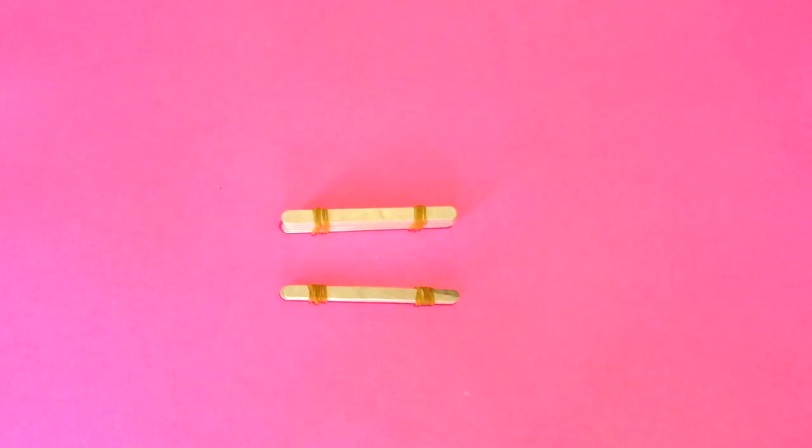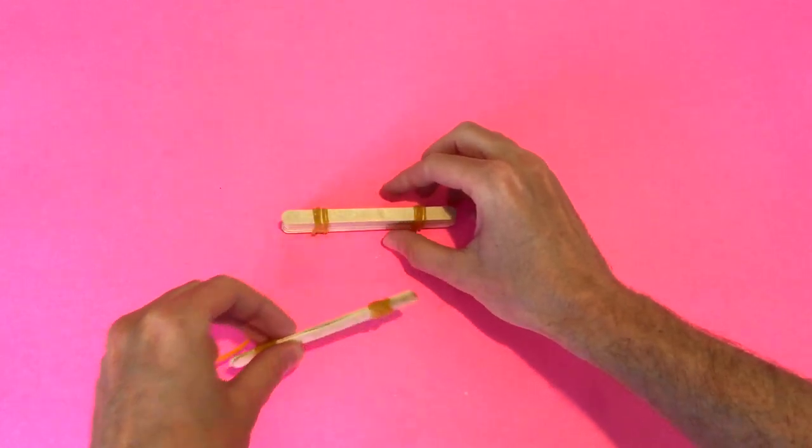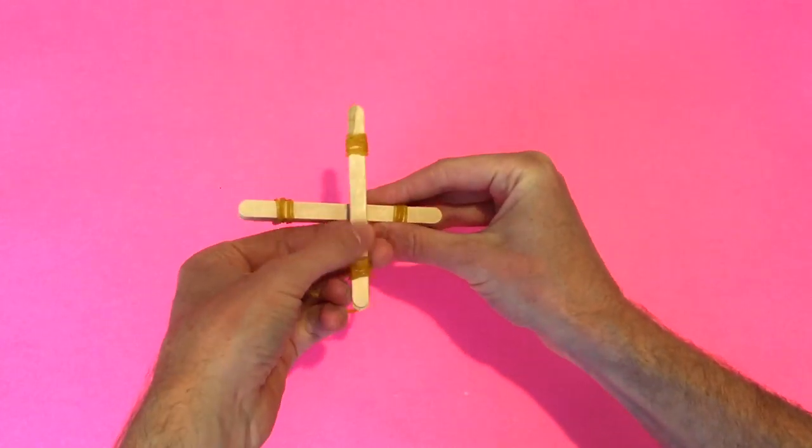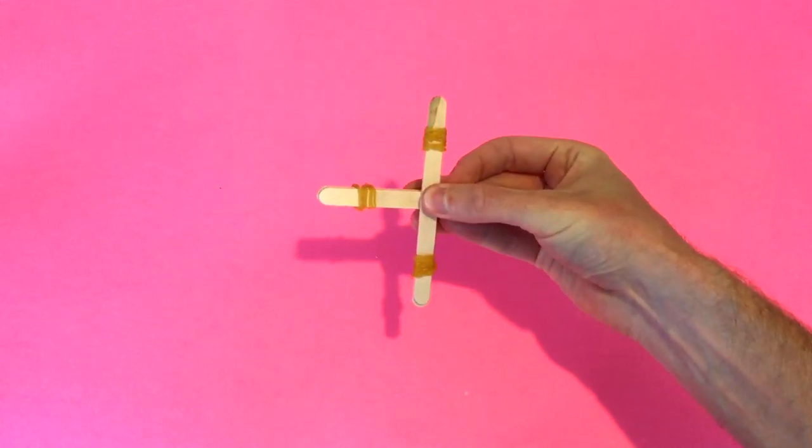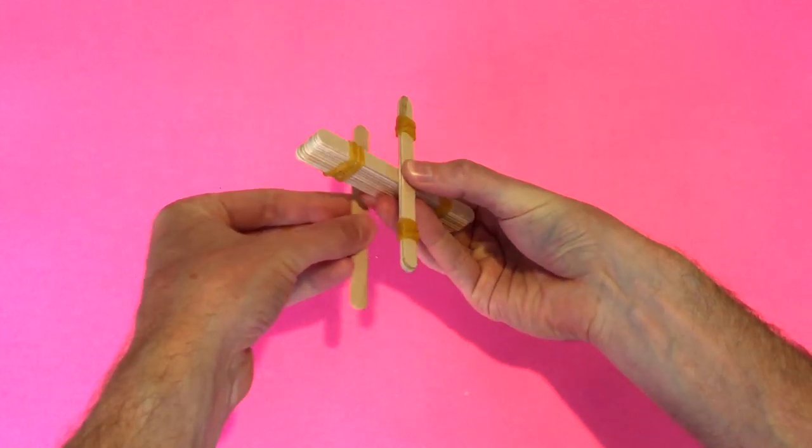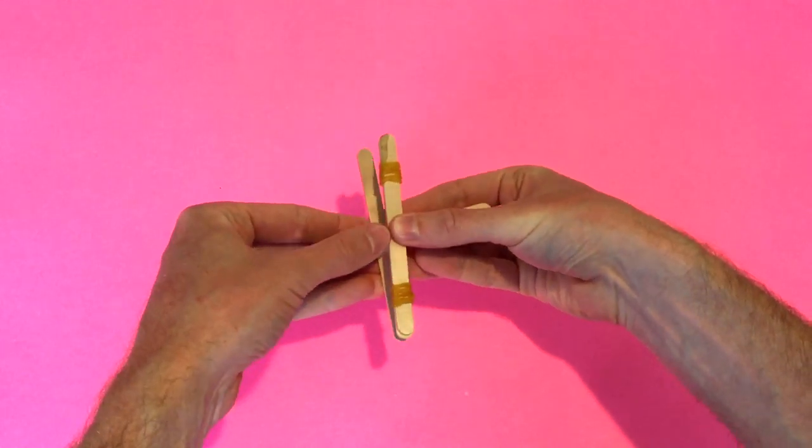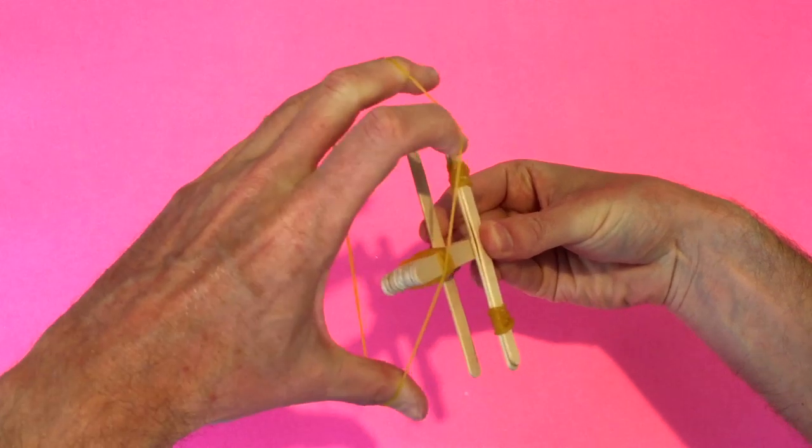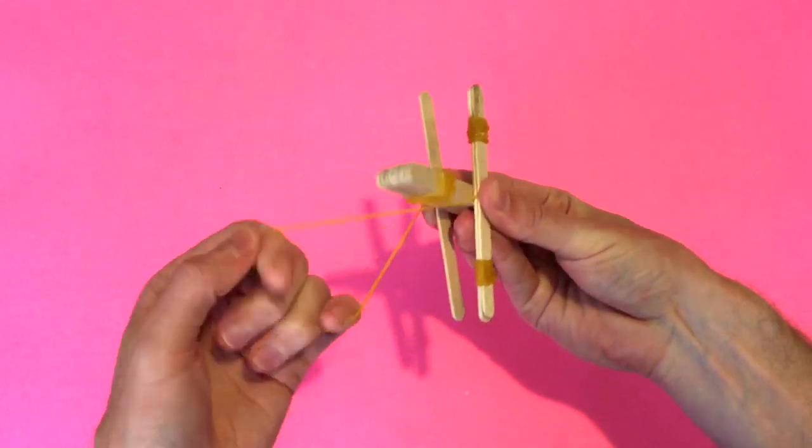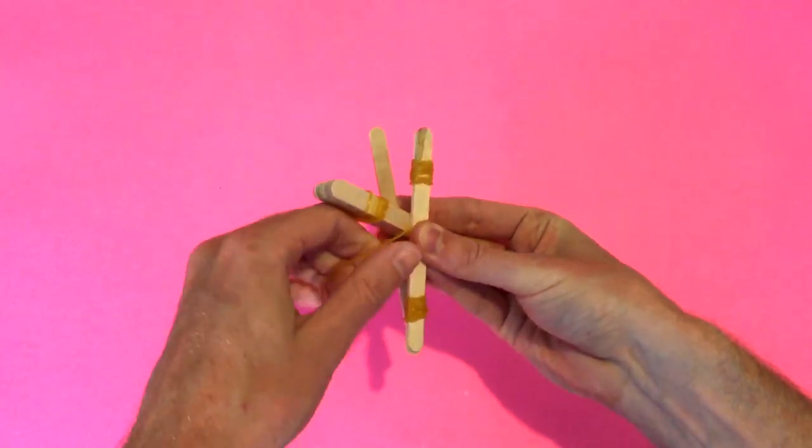The next part is probably the most difficult one. So we're going to leave the big stack on the bottom, put the little ones on top. Then we'll get one extra popsicle stick which will go underneath. Then we're just going to use the rubber band to go around all three of these.